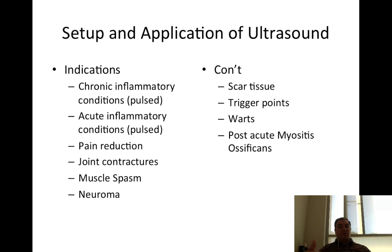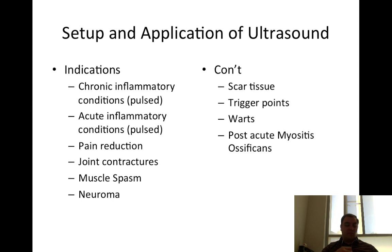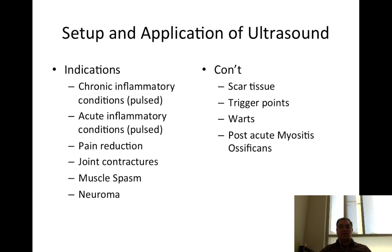Indications for ultrasound: for pulsed ultrasound, these include chronic or acute inflammatory conditions, pain reduction, joint contracture, muscle spasms, neuroma, scar tissue, trigger points, and warts. Post-acute myositis ossificans — a formation of bone due to repetitive trauma to an area, common in football players hitting biceps or quadriceps — can theoretically be helped by ultrasound breaking up that bony formation, per Wolff's Law.